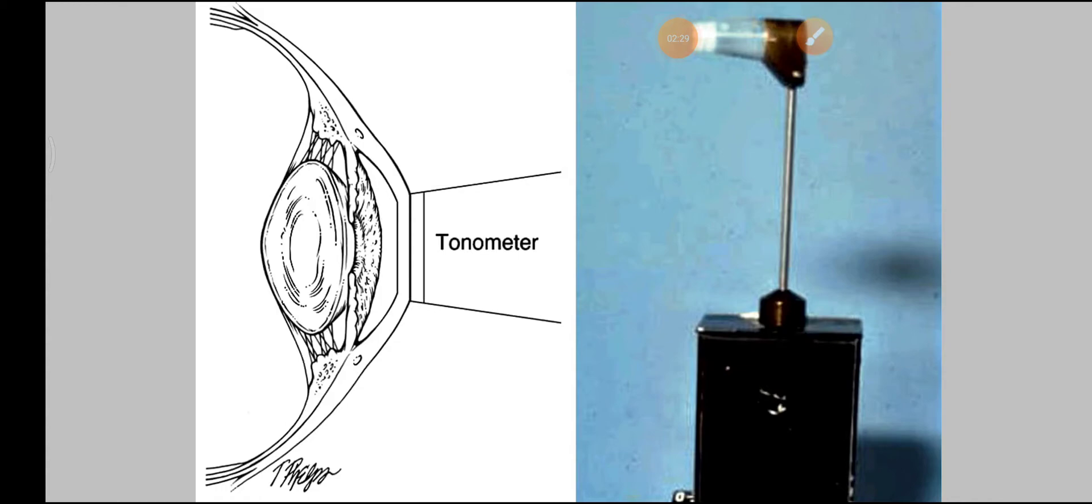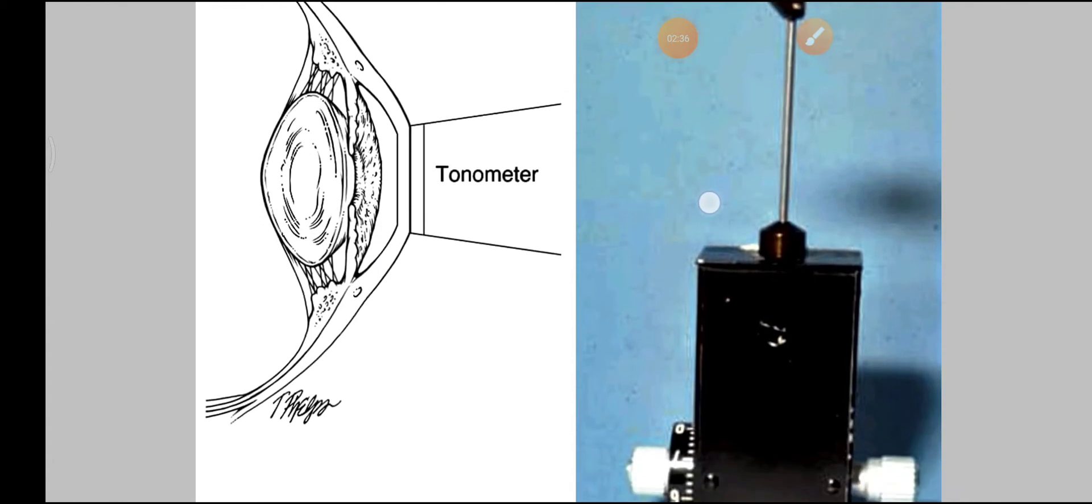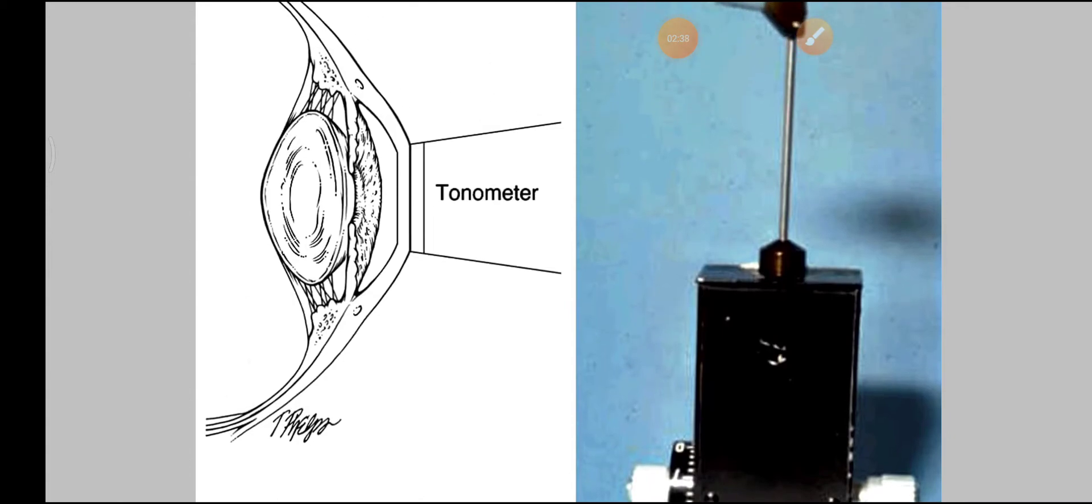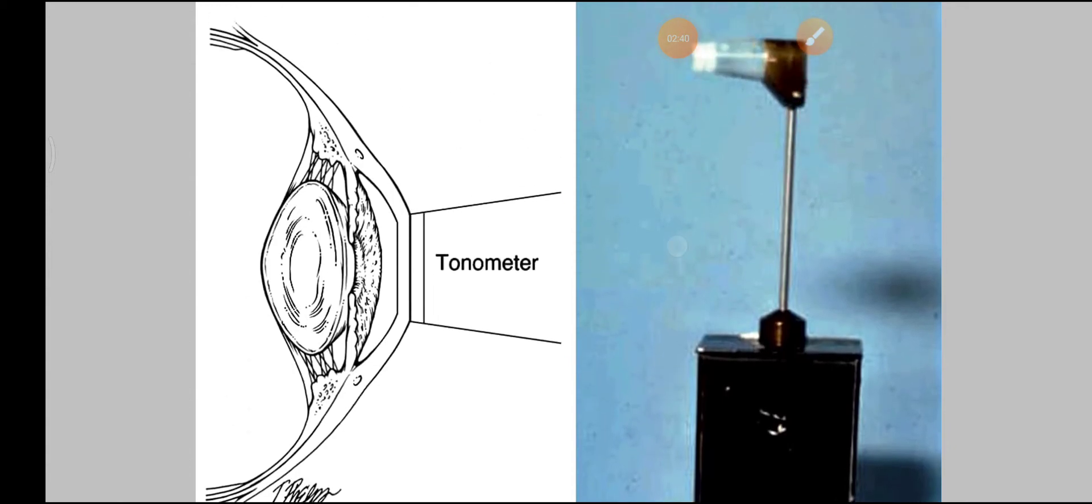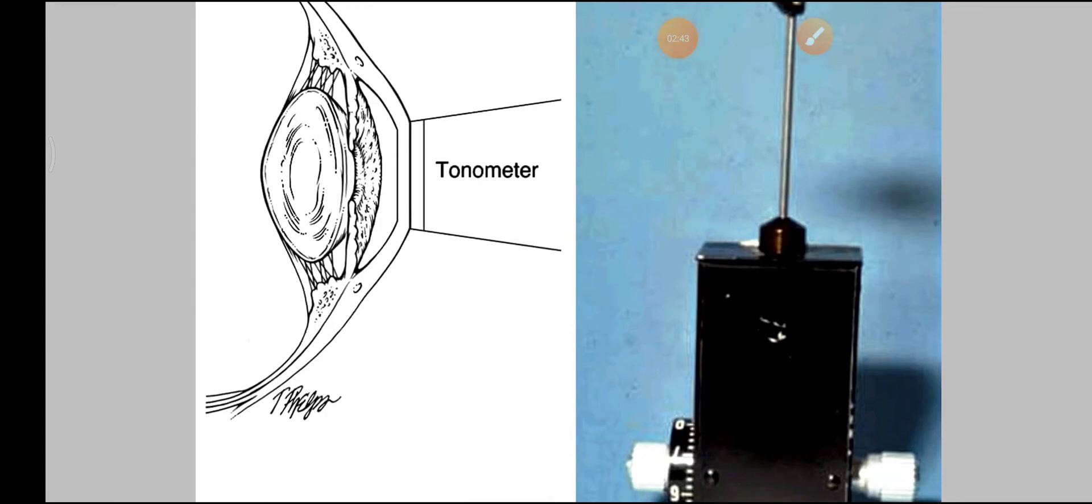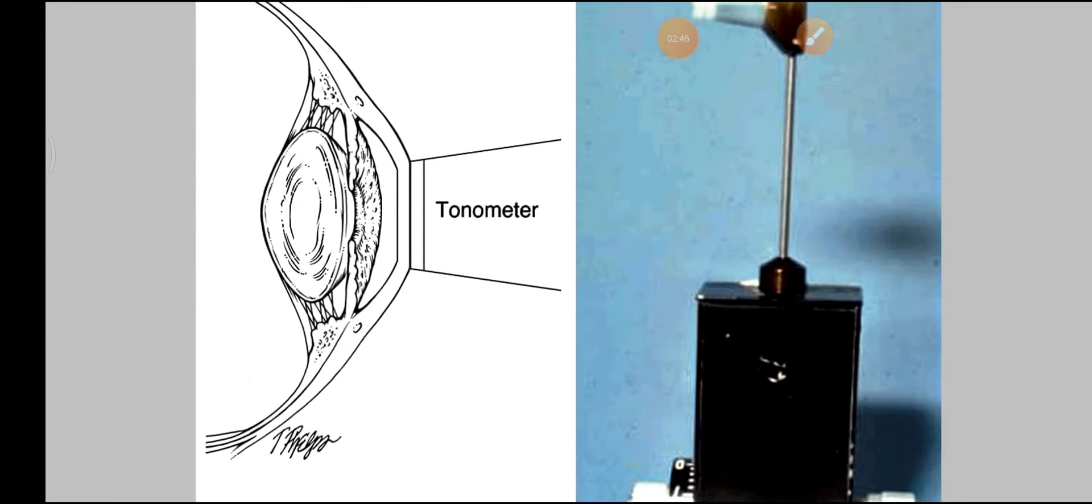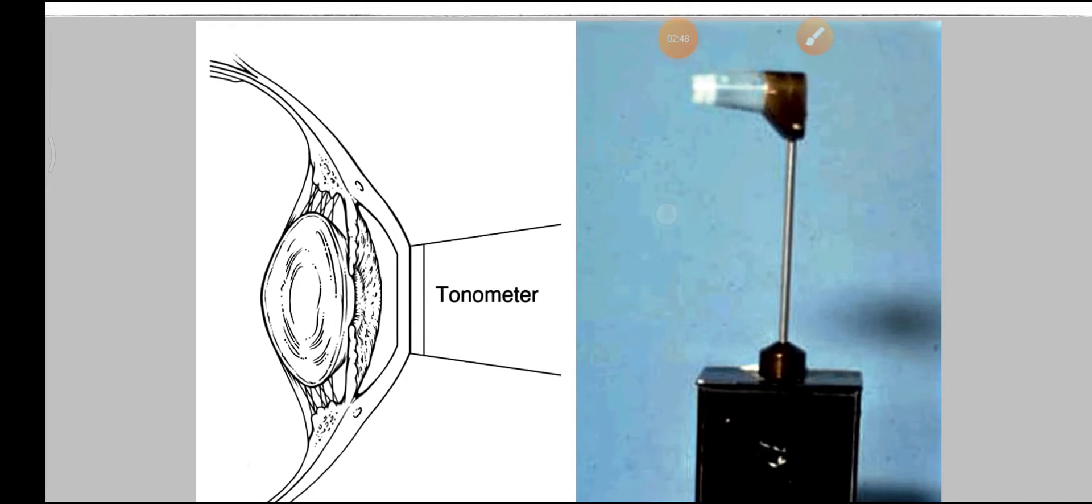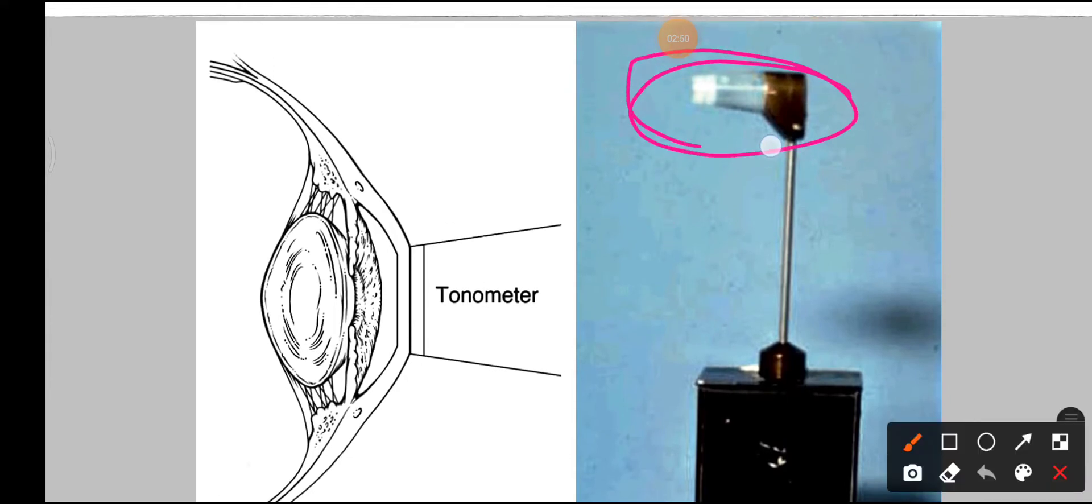The procedure which is done to measure the intraocular pressure: what is done actually is the eye is numbed by using anesthesia or anesthetic fluid, and then this portion of the tonometer is kept in contact with the cornea or pressed on it.